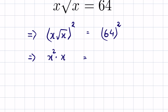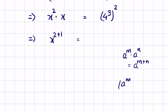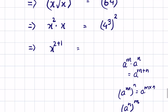So we have x squared times x equal to 64 squared. We can write 64 as 4 raised to the power 3, whole raised to the power 2. This gives x to the power 2 plus 1, using the identity a raised to the power m times a raised to the power n equals a raised to the power m plus n, and the identity a raised to the power m whole raised to the power n equals a raised to the power m times n. So this becomes 4 raised to the power 2 times 3.